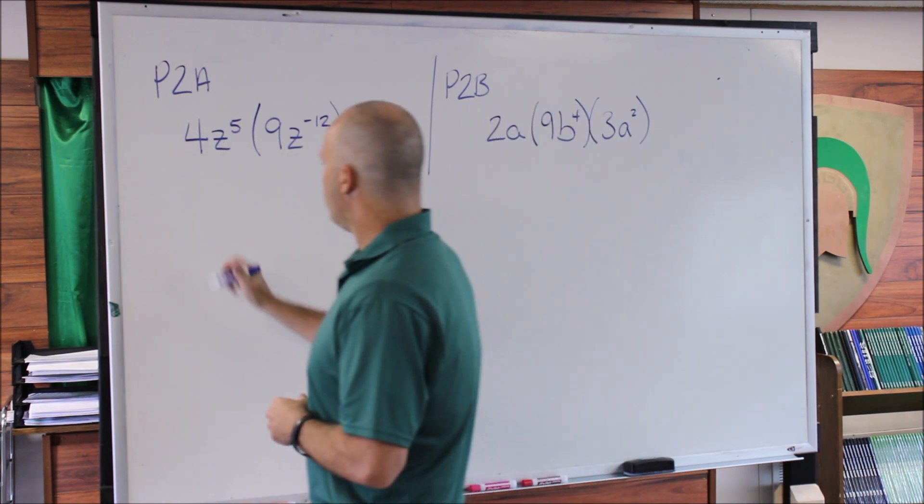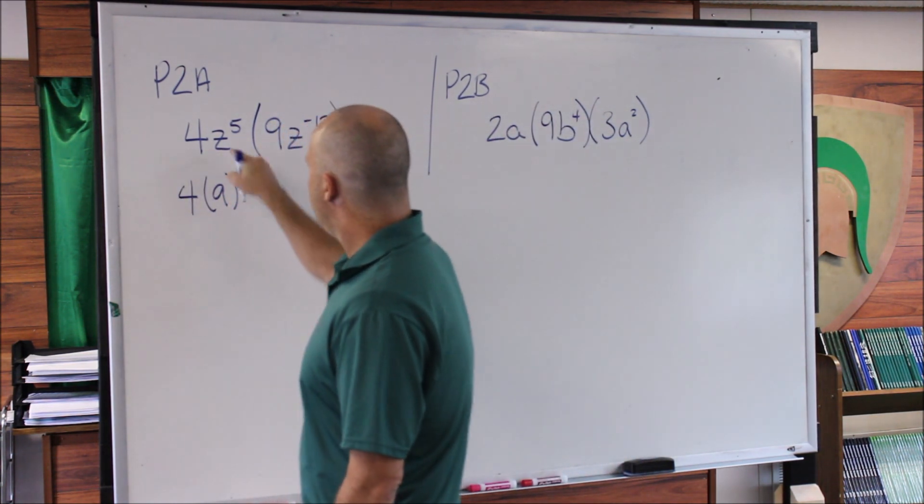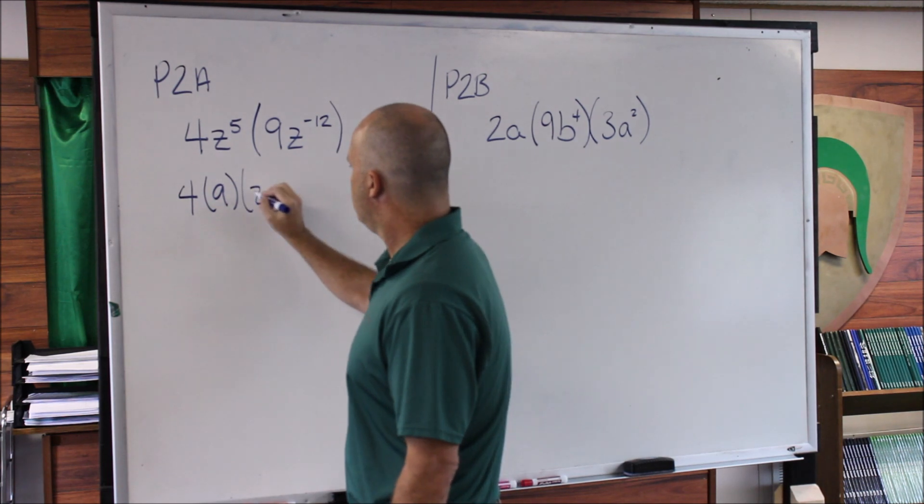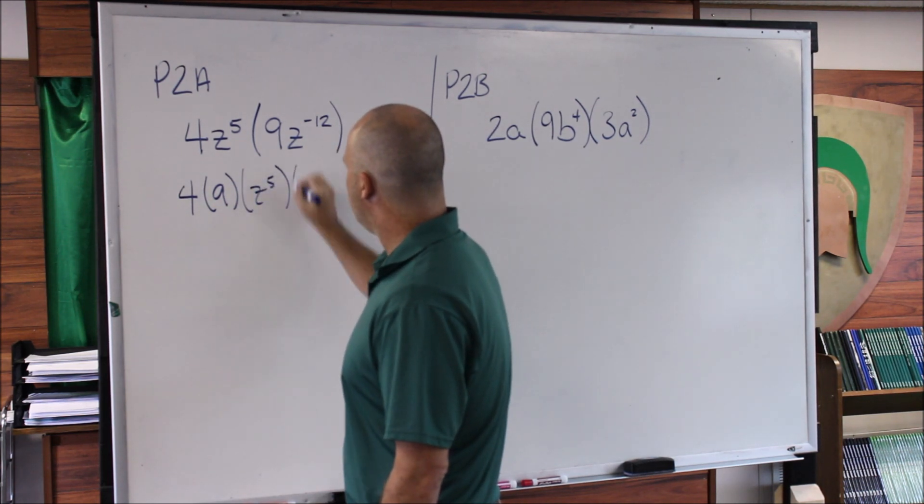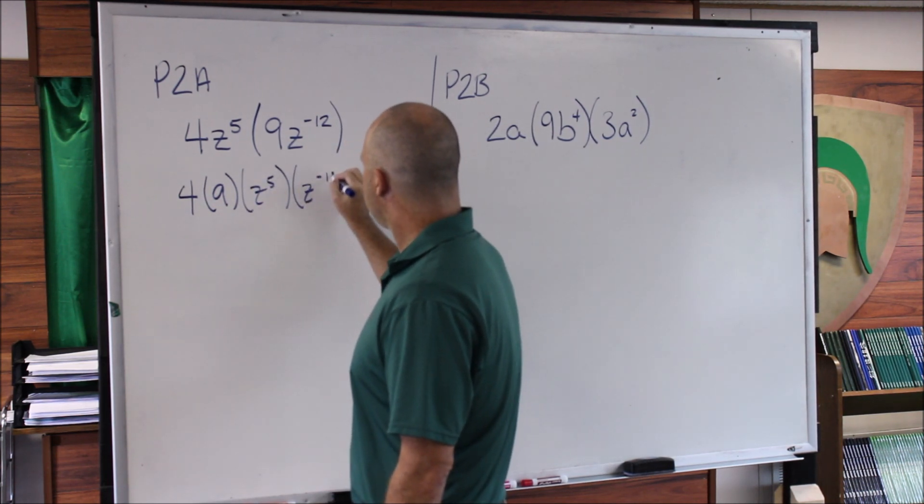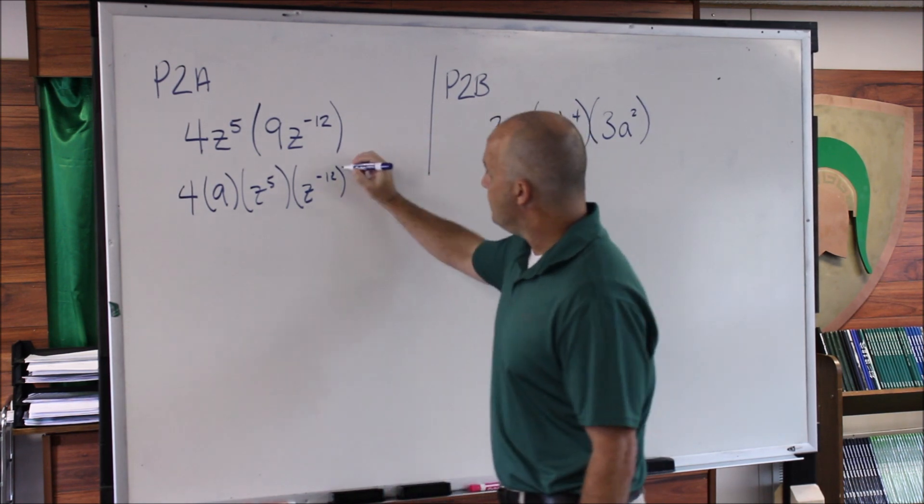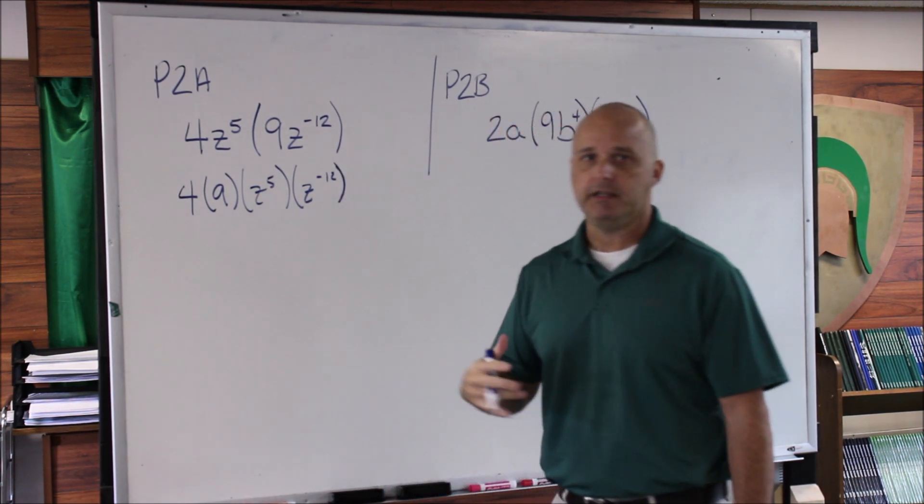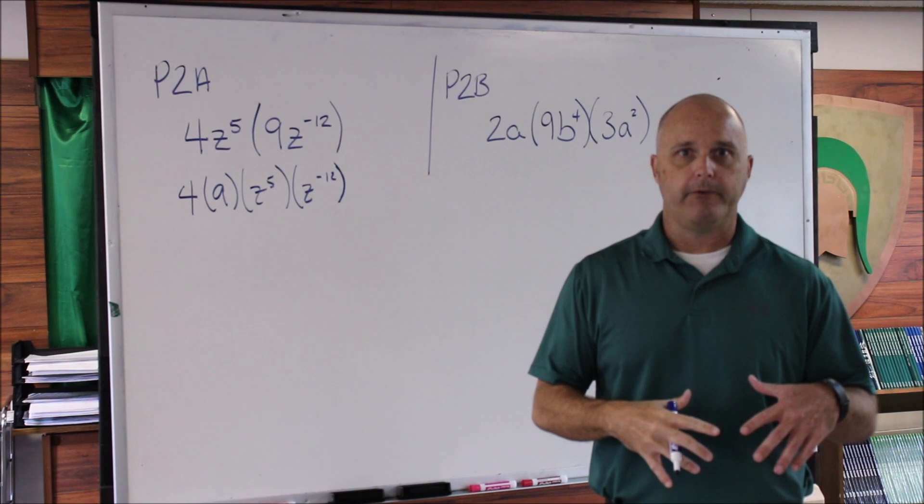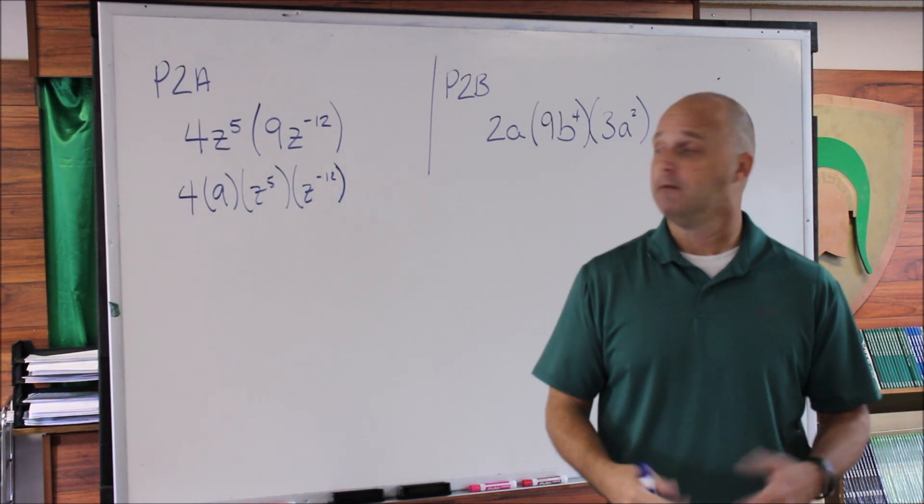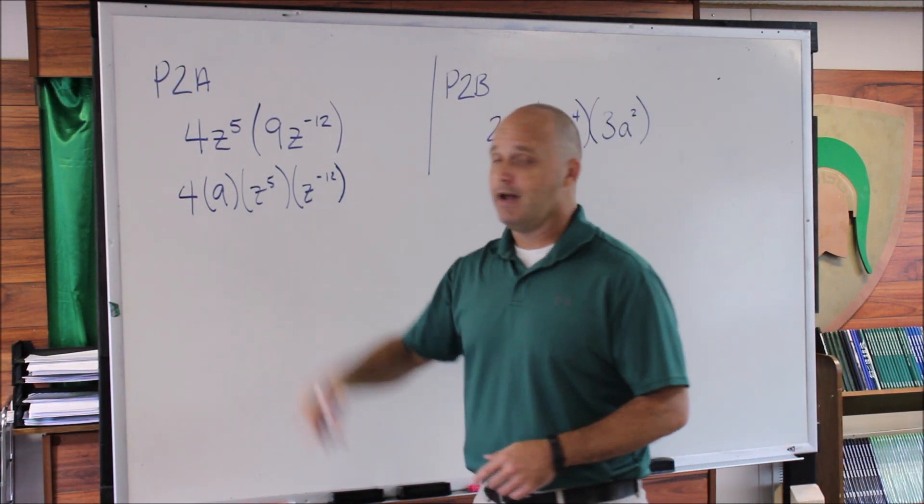So I'm going to take this 4 and this 9 and put them next to each other. Then I'm going to take the z^5 and the z^(-12) and put them next to each other. Once I've got that accomplished, this allows me to see what the next step is going to be.